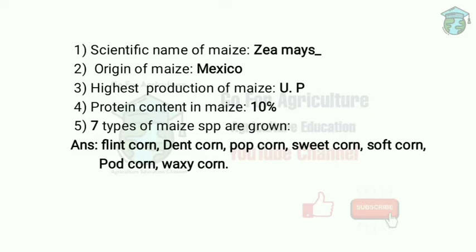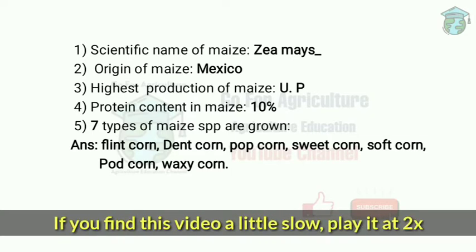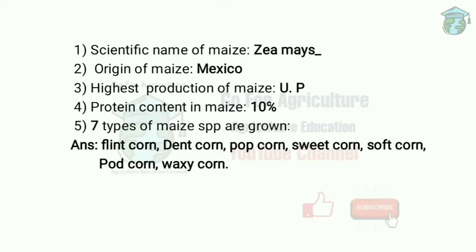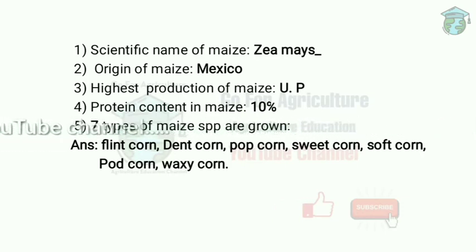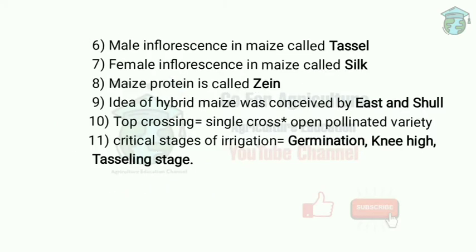A very important question: what are the seven types of maize? The first is flint corn, which is mostly cultivated in India. Next is dent corn, which is most common in the USA. Then popcorn — when heated, pressure builds up within the kernel, resulting in an explosion and the grain turns inside out. Next is sweet corn, which is sweeter than other corn. Then soft corn, pod corn (a primitive type), and waxy corn, which produces starch similar to tapioca.